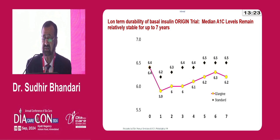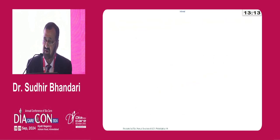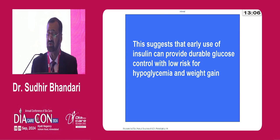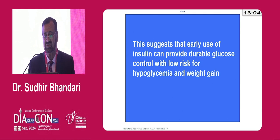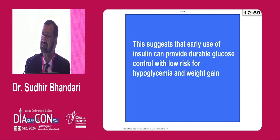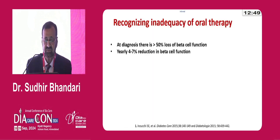The long-term durability of basal insulin as in the ORIGIN trial shows a stable action for up to almost 7 years, well documented in that trial. This suggests that early use of insulin can provide durable glucose control with no risk for hypoglycemia and weight gain. Hence the strength of starting basal insulin very early — but more important is to optimize the doses so that patients have fewer complications later.